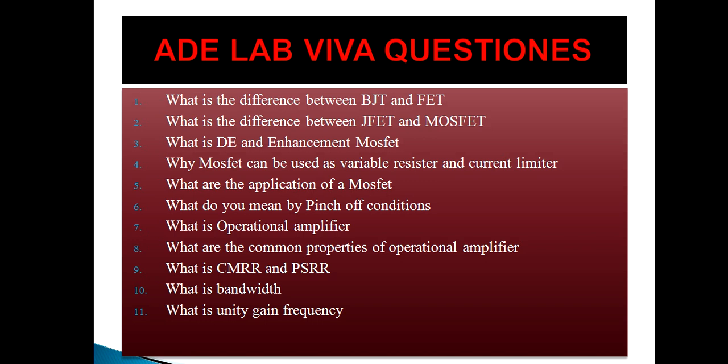What is depletion and enhancement MOSFET? Depletion MOSFET works in two ways: enhancement mode and depletion mode, controlled by the gate-to-source voltage. When you give a positive gate-to-source voltage, it works in enhancement mode. When you give a negative gate-to-source voltage, it works in depletion mode. Enhancement MOSFET works in enhancement mode only.